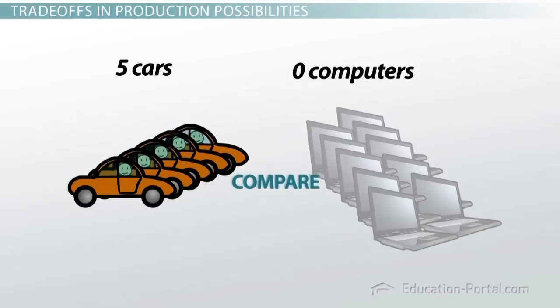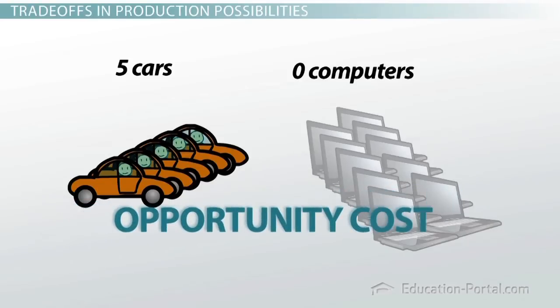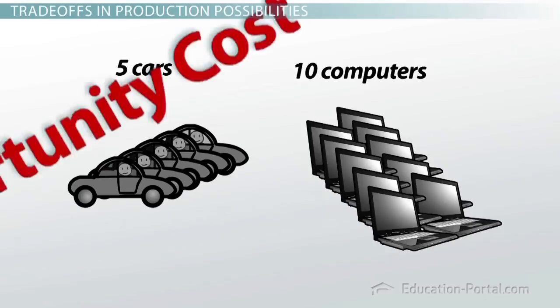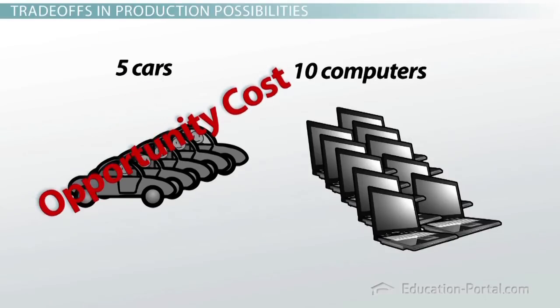When we compare the production rates, we can speak in terms of opportunity cost, like this. If we make ten computers, we lose the opportunity to make five cars, and vice versa.